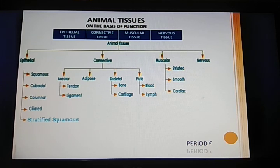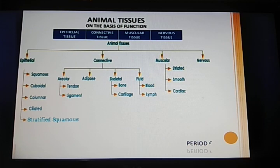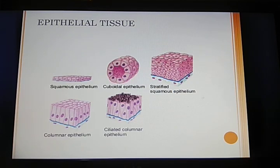We will go to the 3rd category — muscular tissue. It is of 3 types: striated muscles, smooth muscles, and cardiac muscle. Then finally we will read nervous tissue. Let's have a detailed reading of all tissues.